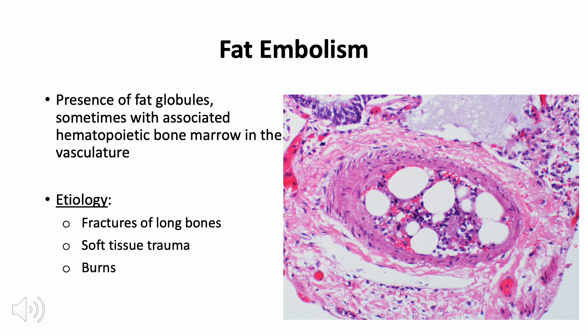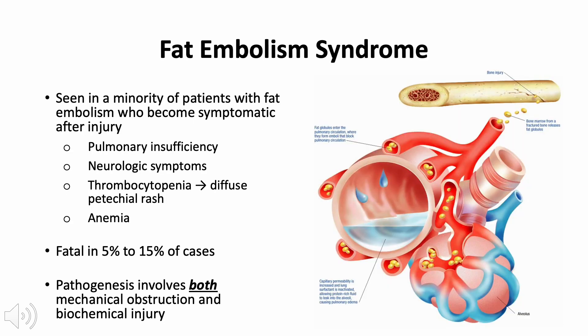Fat embolism is the presence of fat globules - sometimes with associated hematopoietic bone marrow - in the vasculature, due to fracture of long bones, soft tissue trauma, or birth. Fat embolism syndrome applies to the minority of patients who become symptomatic, characterized by pulmonary insufficiency, neurologic symptoms, thrombocytopenia, and anemia. The syndrome can be fatal in up to 15% of cases, and its pathogenesis involves both mechanical obstruction and biochemical injury.